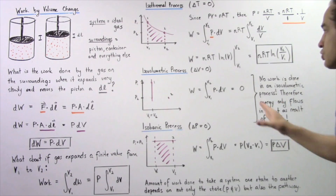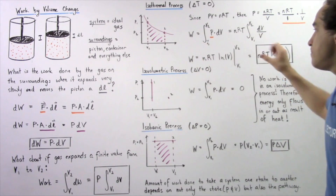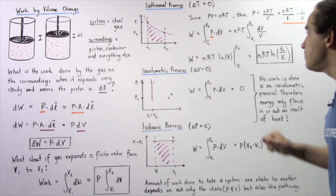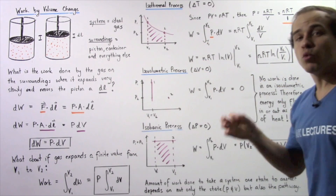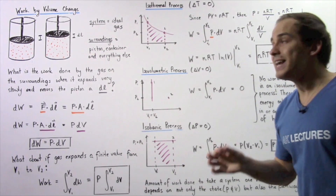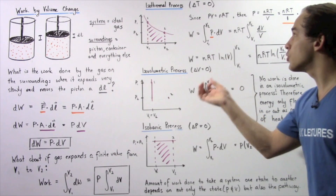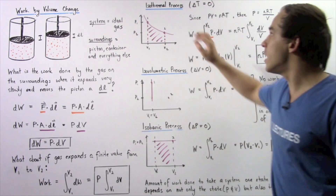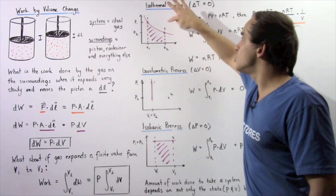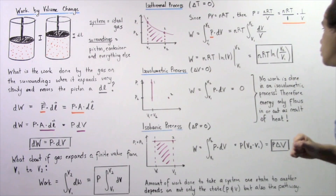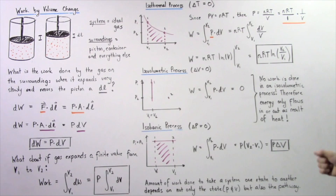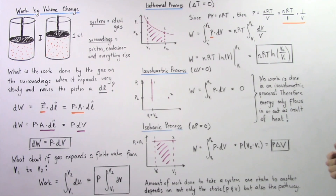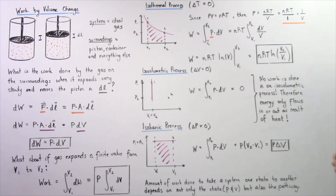Evaluating this integral, the work done in an isothermal process going from position one to position two equals nRT times the natural logarithm of V2 over V1.